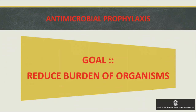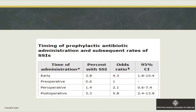Why do we do antimicrobial prophylaxis? The main goal is to reduce the burden of organisms during surgery and prevent infection. Timing definitions: early prophylaxis is 2–24 hours before incision; pre-op is 0–2 hours before; peri-op is about 3 hours; and post-op is more than 3 hours after the incision.